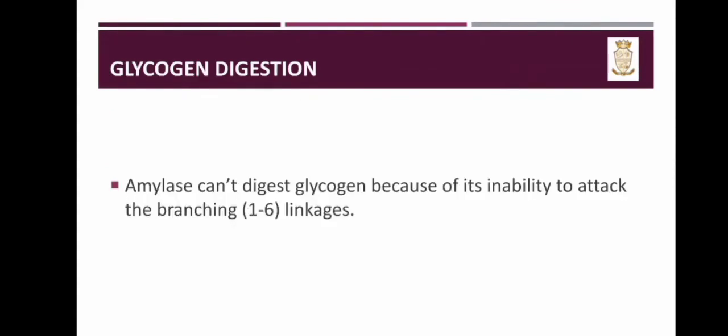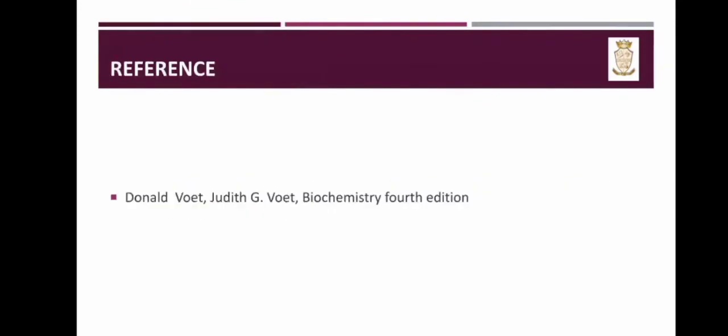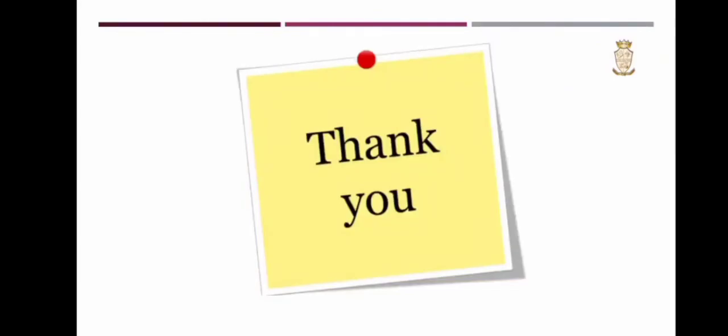Next is glycogen digestion. Amylase cannot digest glycogen because of its inability to attack the branching alpha 1-6 linkages. So amylase has no specific role in glycogen digestion. That's all, thank you.